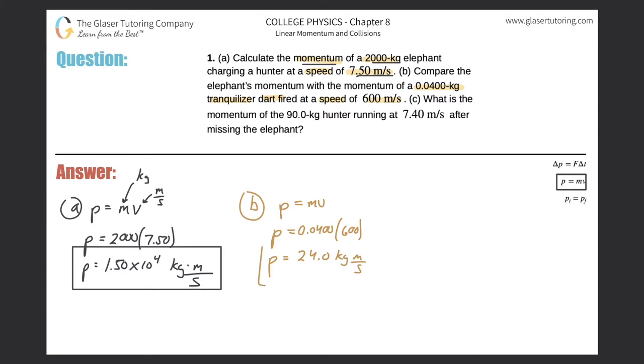So now really what they wanted, though, is they wanted us to compare the momentum of the dart to that of the elephant. So we can simply do a division to compare the two, or we'll find out how much larger the momentum of the elephant was in relation to the momentum of the dart. So let's just plug it all in.